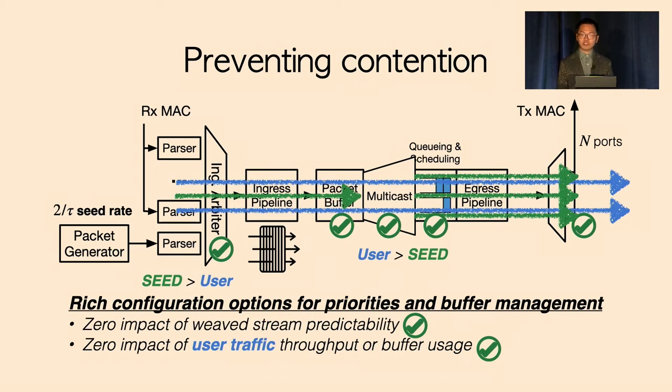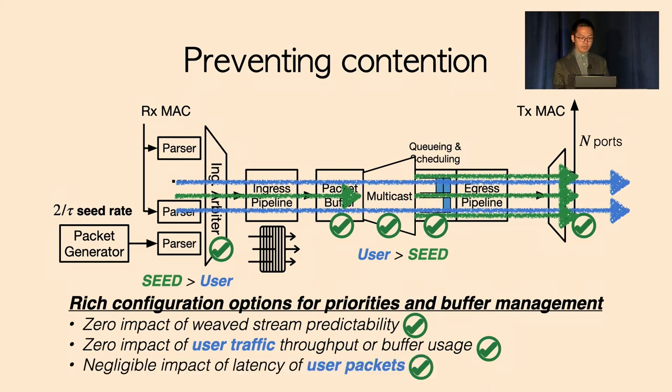To resolve these contentions, OpWeaver leveraged the rich traffic management configurations available in today's programmable switches. The paper contains more details, but in the end, OpWeaver is able to preserve the predictability of the weave strings and guarantees there is zero impact on user traffic throughput and their buffer usage. The impact on user packet latencies is restricted to only rare packet instances and therefore negligible.